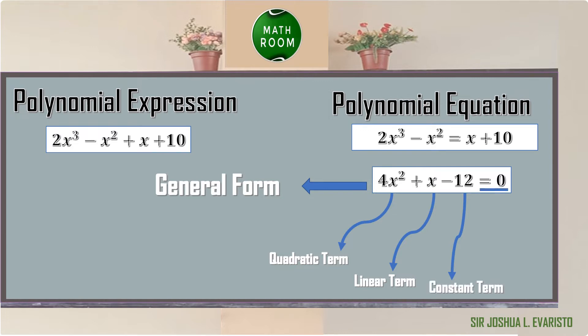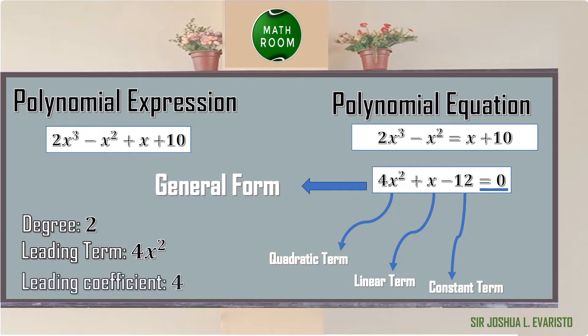In this example, the degree is 2 since that is the highest exponent. The leading term is 4x squared since it contains the highest exponent, and the leading coefficient is 4 because it is the coefficient of the leading term.